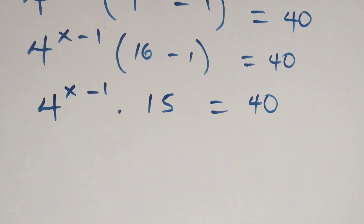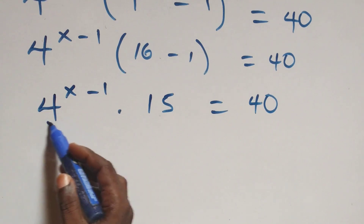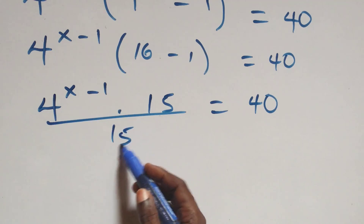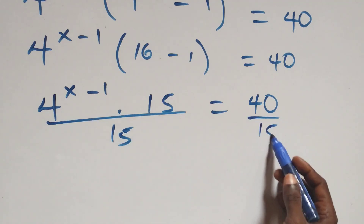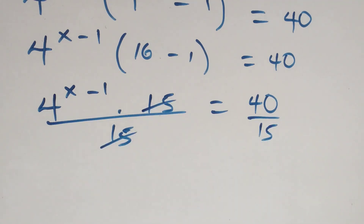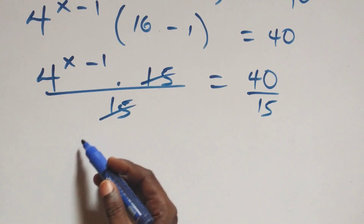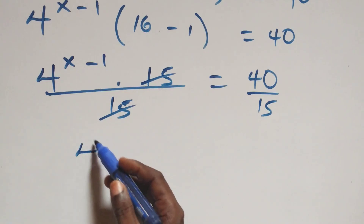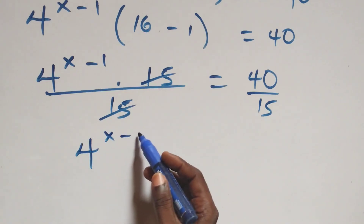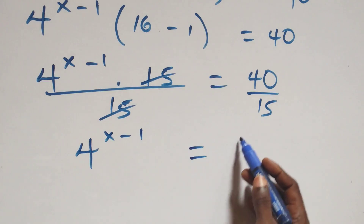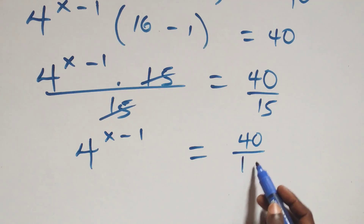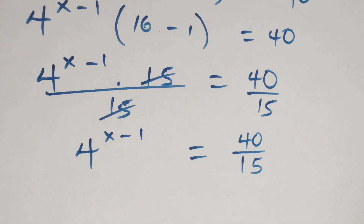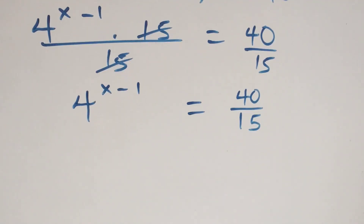The next step: we divide both sides by 15. Dividing this side by 15 and also this side by 15, the 15s cancel each other, leaving 4 raised to the power x minus one, which equals 40 over 15.